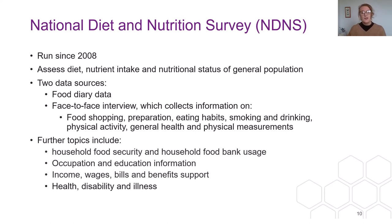The NDNS also covers household food security, occupation and education information, food bank usage, information on income, wages, bills, whether the household receives any benefit support, and also information on health, disability and general health as well.